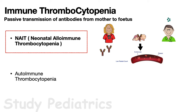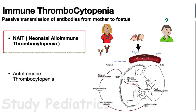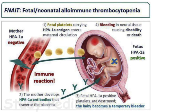This mechanism can be understood from the diagram shown. In the fetus, maternal anti-HPA antibodies cause destruction of platelets and inhibition of megakaryocyte development, resulting in thrombocytopenia. A dreaded complication of low platelets is intracranial hemorrhage, making in-depth understanding of this topic essential.